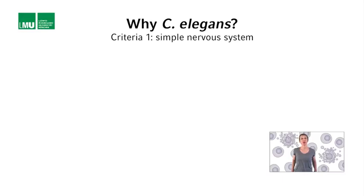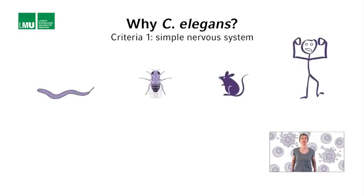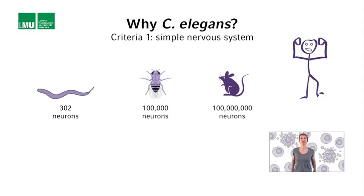Concerning the first criteria, C. elegans has a nervous system that is very simple, and that indeed could be completely determined at the structural level. The C. elegans nervous system is composed of exactly 302 neurons. For comparison, the nervous system of the fruit fly Drosophila melanogaster has 10 to the fifth neurons, that of mice 10 to the eighth, and that of humans 10 to the 11th.